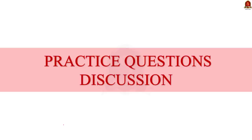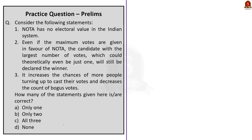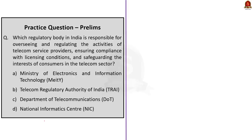Now we have come to the prelims practice question discussion. Look at the first question — it is about NOTA. Statement 1: NOTA has no electoral value in the Indian system. This is correct — even if maximum votes are given in favour of NOTA, the candidate with the largest number of votes will still be declared the winner. Statement 2 is also correct. Statement 3: It increases the chances of more people turning up to cast their votes and decreases the count of bogus votes — this is also correct. So, the correct answer is option C, all three. The second question asks which regulatory body in India is responsible for overseeing and regulating the activities of telecom service providers, ensuring compliance with licensing conditions, and safeguarding the interest of consumers in the telecom sector. The correct answer is option B — Telecom Regulatory Authority of India.